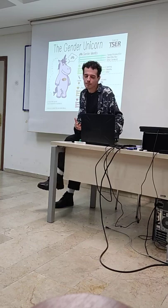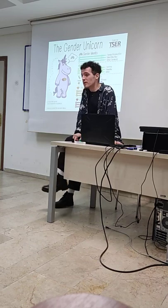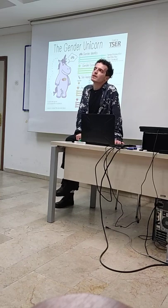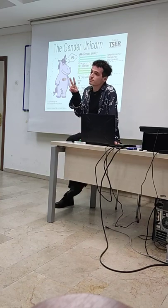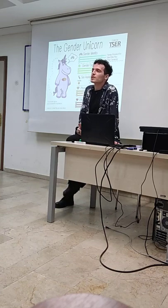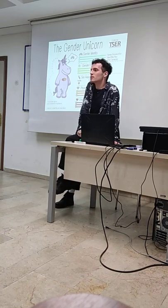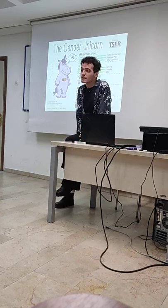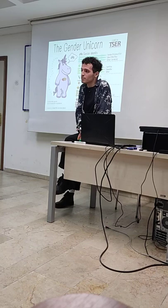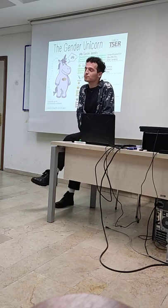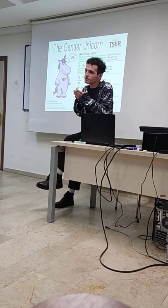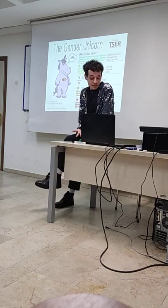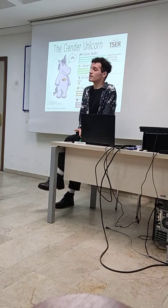In a later period in Ottoman Turkey, especially after Tanzimat and the Republic, we see the two-sex theory — the vagina and the penis. Women and men are, to some extent, equal. This is a very heterosexualized theory.